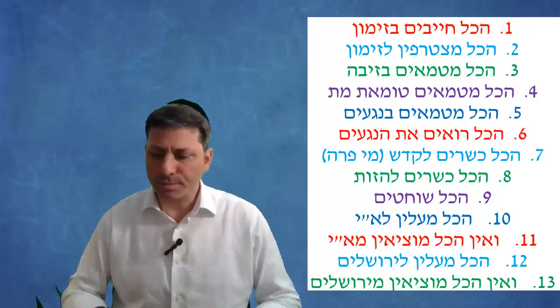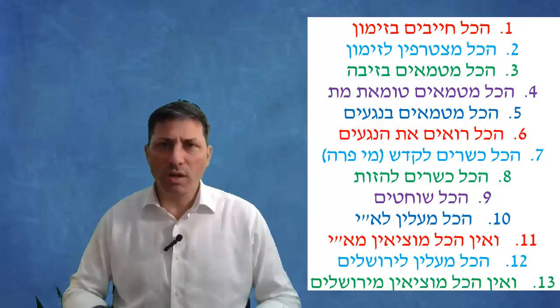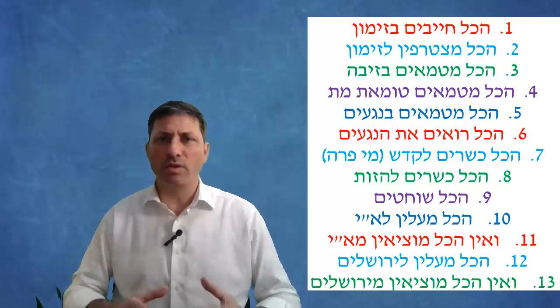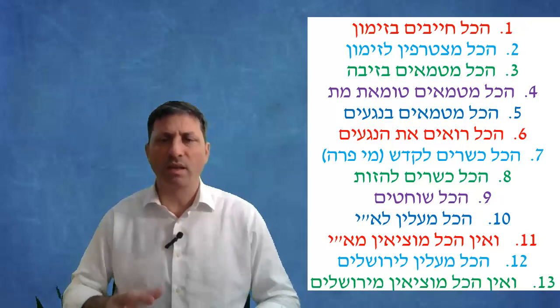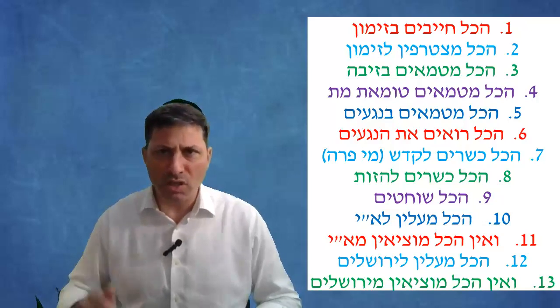Hakol ro'im hanegaim - all kohanim could check negaim tzaraas and say whether it's a tzaraas or not. It comes to include even somebody that doesn't know anything about tzaraas, a kohen am ha'aretz, where he strolls with him and teaches him the halacha on this patch. Although he doesn't know all the halacha, he just knows this specific one, he can pass him.